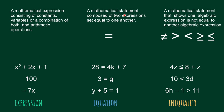Next, an equation is a mathematical statement composed of two expressions set equal to one another — meaning it uses the equal sign. For example, 28 equals 4k plus 7. The value of k, when multiplied by 4 and added to 7, should give 28 because both sides must be equal. Another example: 3 equals g, meaning the value of g is 3. If you substitute it, 3 equals 3 — that is evaluation.